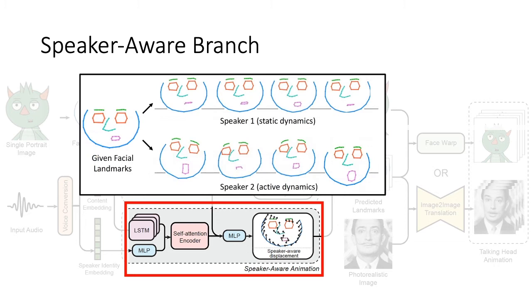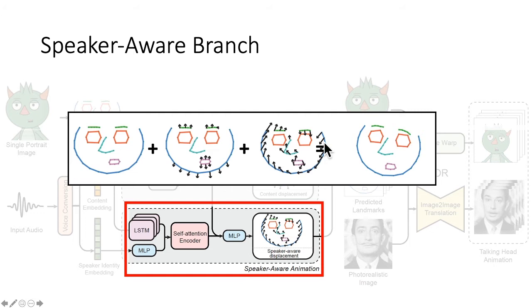Suppose we have two speakers. Speaker one has more static characteristics — when they speak, mostly just the lip is moving. Given speaker two, who has more active dynamics, we can see the head has more drastic movement. That's what we're trying to capture with the speaker-aware displacement. The third part is the stylized part — combining with the content branch and the base animation, the two displacements added together formulate the final animation. Once we have the face landmarks, we apply various techniques to drive the single image animation.